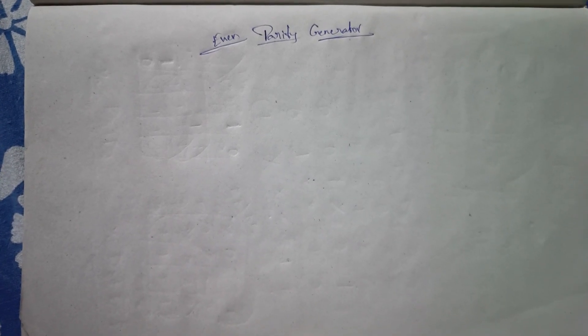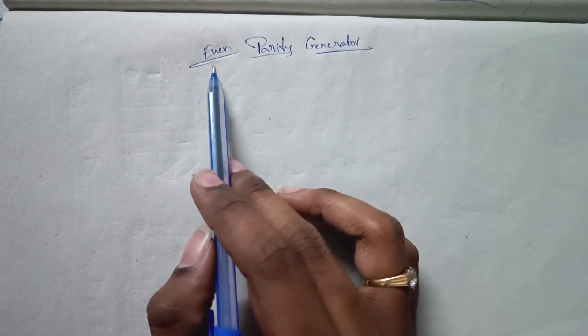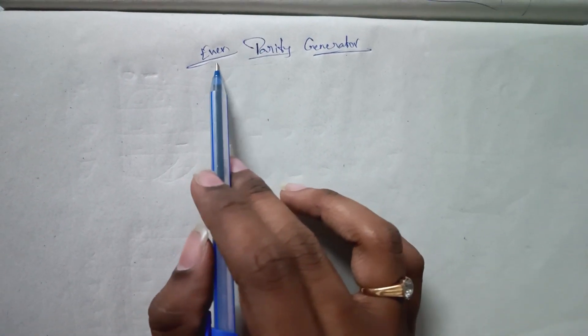Hello guys, welcome back to our channel. Today we are going to see what is an even parity generator. These parity generators are used in security systems or data security, which is used to verify whether the transmitter information and the receiver information are the same or not, and whether there are any errors or not.